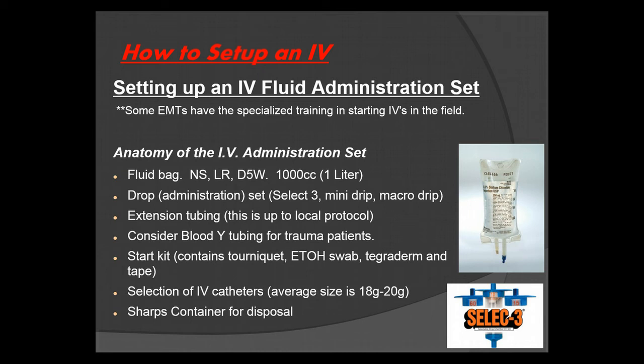The administration set is going to contain the fluid bag. In the field you'll have three potential fluids: normal saline, lactated Ringer's, and D5W. These generally come in a 1000cc or 1 liter bag, though some services carry 250 as well as 500cc bags. You're going to have your drop or administration set, including micro drip and macro drip sets, which are entirely dependent on your service, your protocols, and your partner's preference.